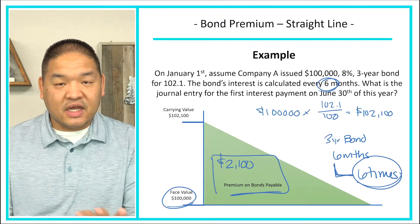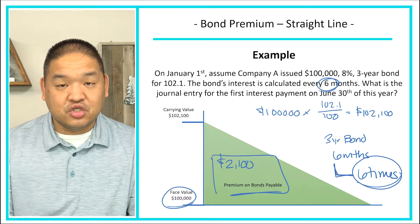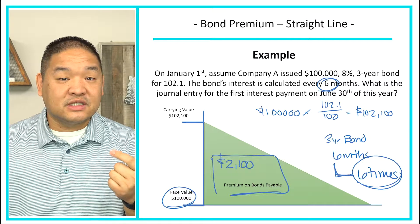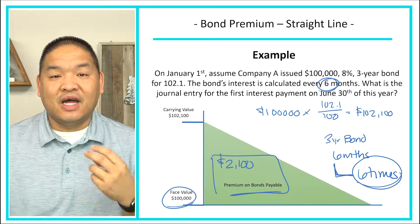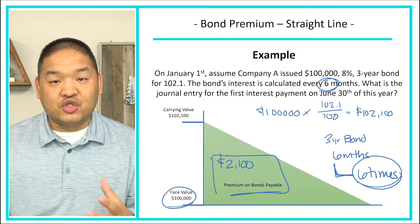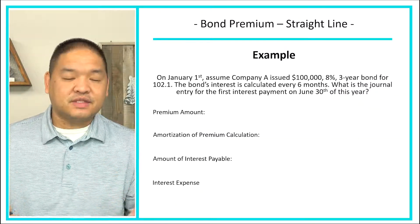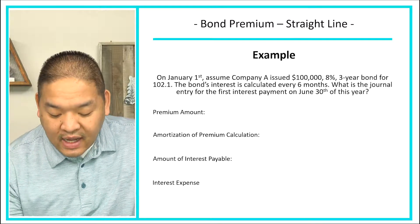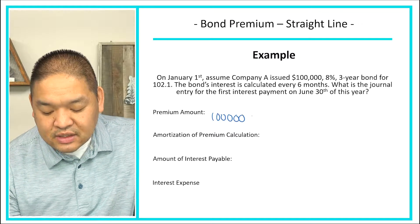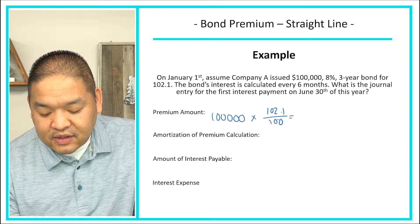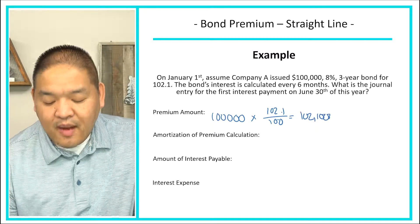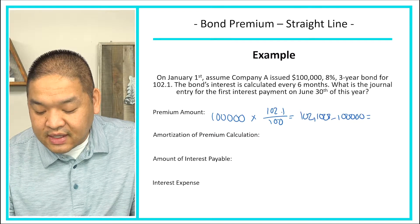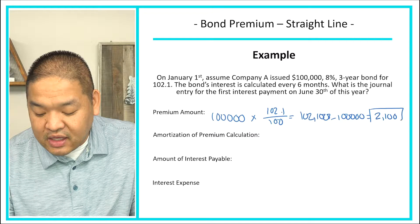Once we have a good understanding of the data, we need to start solving for the journal entry. We're going to need to find the interest paid, the interest expense, and the amortization of the premium. First: what's the premium? We said the premium is $100,000 times 102.1 over 100, giving us $102,100. Since this bond is worth just $100,000, the premium is $2,100.